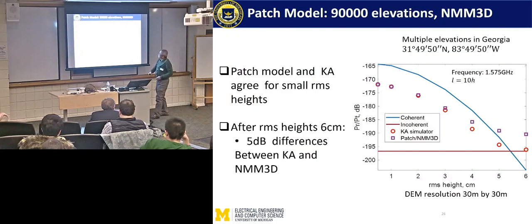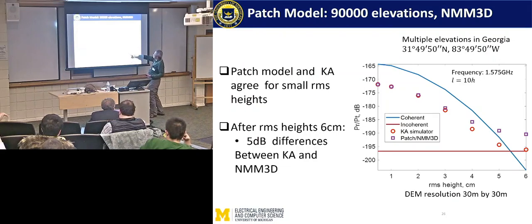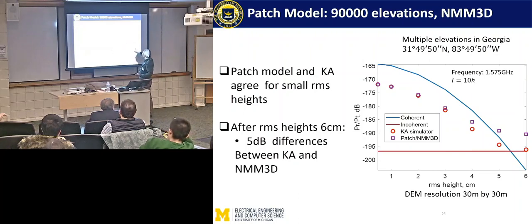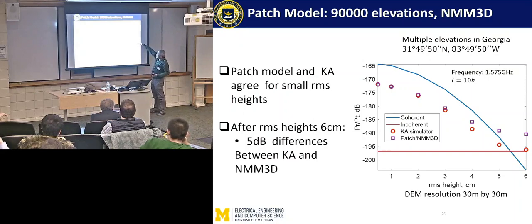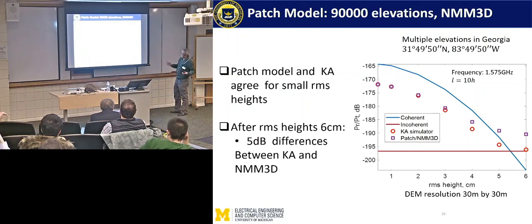The coherent model has definite phase; the incoherent model has random phase. The coherent model depends on height h; the incoherent depends on slope. The summation of coherent fields — even though each patch is coherent — when you add them up, the phase is mostly random for most cases. So you cannot say the summation of coherent fields is coherent, because the phase is random. But it also depends on RMS height h, so you cannot call it incoherent either, since incoherent depends on RMS slope. The patch model result agrees quite well with the Kirchhoff simulator data.